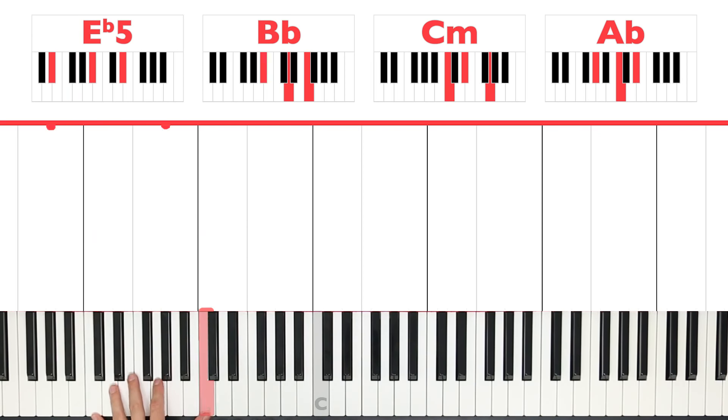Now what I like to do, because the first chord is an E flat 5 chord, is I like to play that B flat in the left hand. So now we get E flat, B flat, E flat and then you get the B flat octave, C octave and A flat octave. It's only for the first chord so let's give it a go right here.